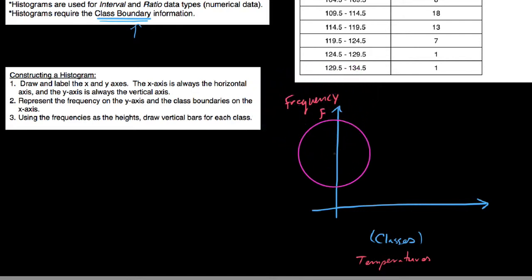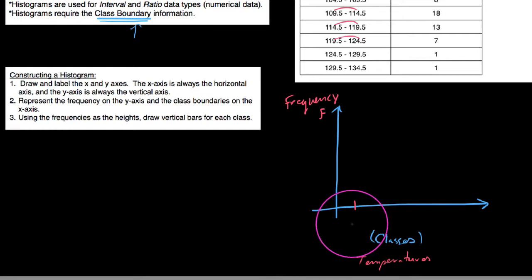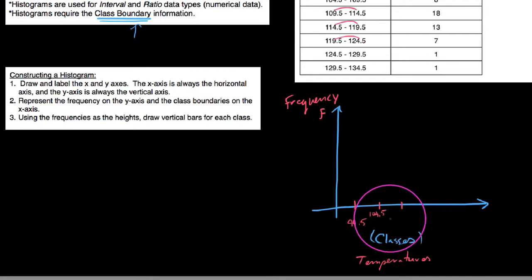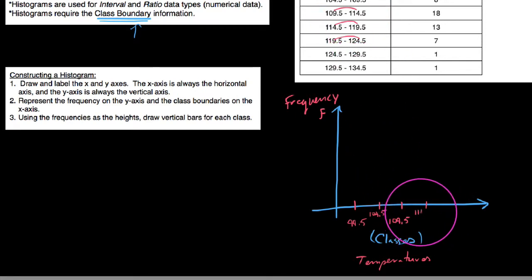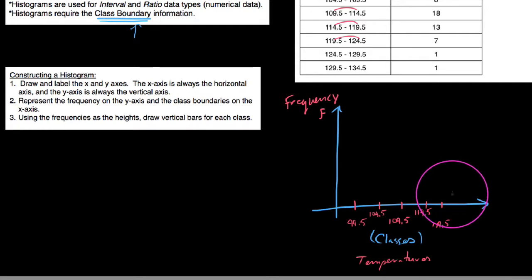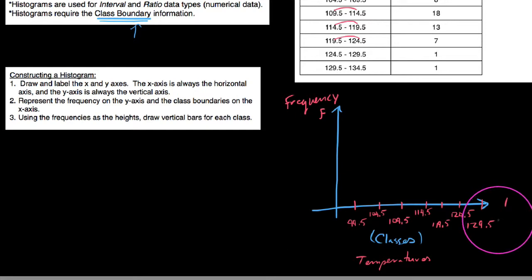You could even write a lowercase f on the y-axis. For the x-axis, we put the class boundaries. We go from 99.5 up to 104.5 — a width of five — and each class has a width of five. We put a number on the x-axis for each boundary: 99.5, 104.5, 109.5, 114.5, 119.5, 124.5, 129.5, and finally 134.5.